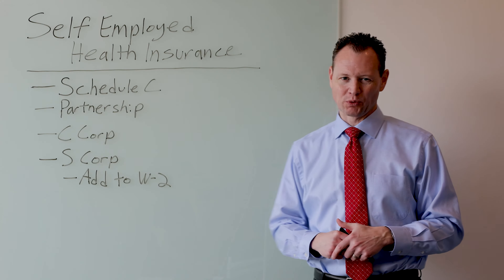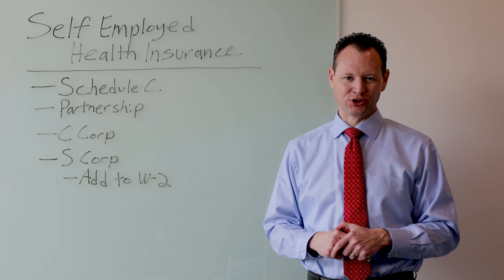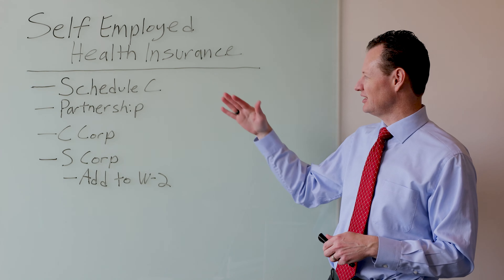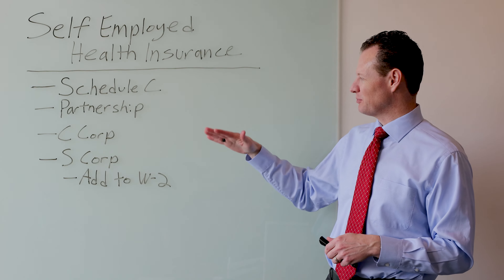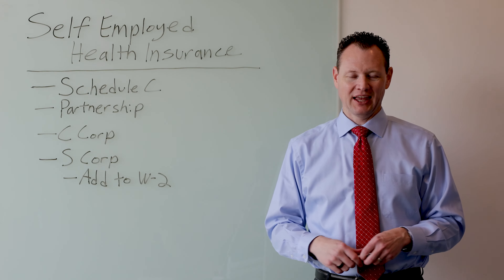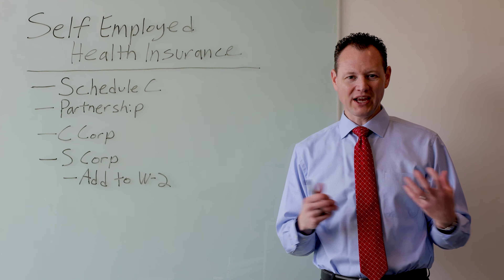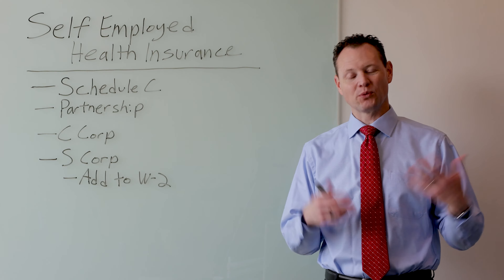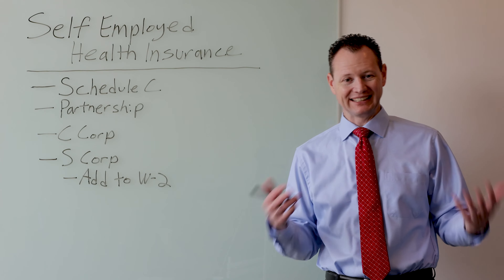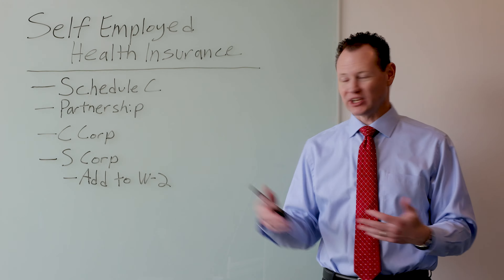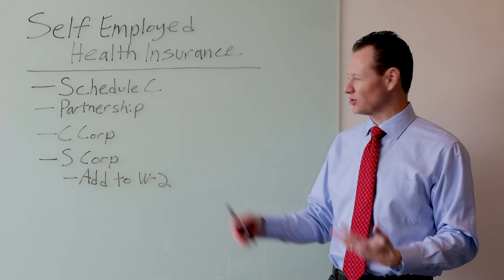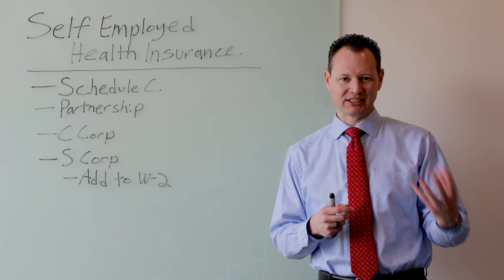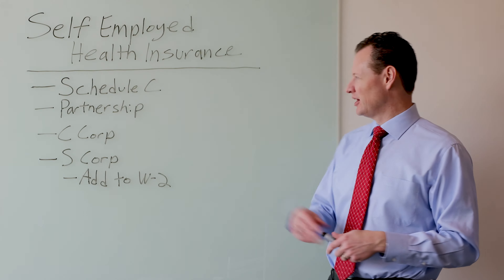I've written out various ways of doing business. We have Schedule C, a partnership, a C-corp, and an S-corp. The way that health insurance premiums are deducted for each of these business owners can be a little bit different depending on the situation.